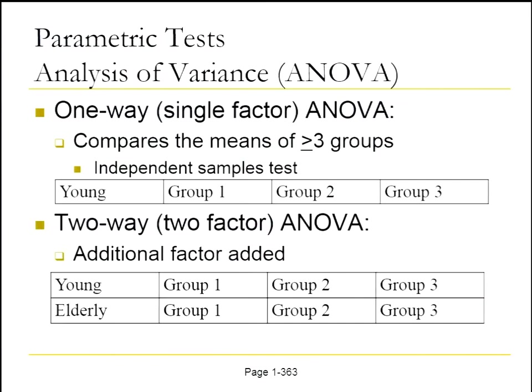If we have three groups, we use ANOVA. We extend our unpaired t-test to include three groups and compare the means — generating one p-value. We can further expand this: we can add a factor, such as those less than 40 versus those older than 40, across the three groups. Similarly, we can extend a paired t-test to multiple time points. We can keep expanding the analysis, but those are the fundamentals.